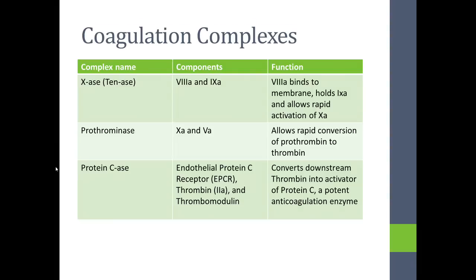Protein Case is a combination of the endothelial protein C receptor, or EPCR, and thrombin, which is activated factor II, and a protein called thrombomodulin. This causes thrombin to convert from a fibrin activator to a protein C activator. When a large amount of thrombin is converted like this, a large amount of protein C is made, and then at least locally has the effect of inhibiting the clotting system in that area.